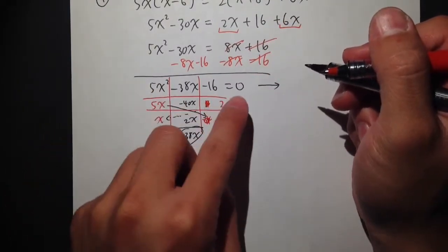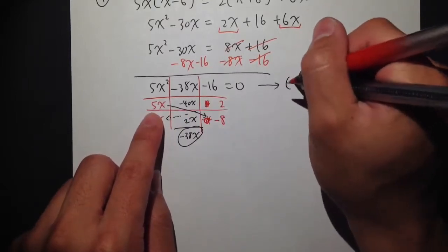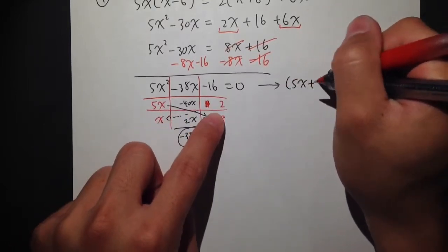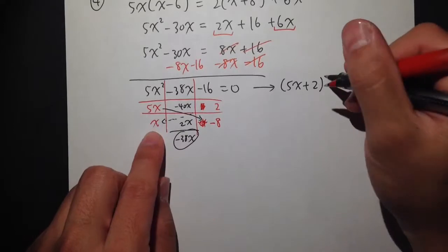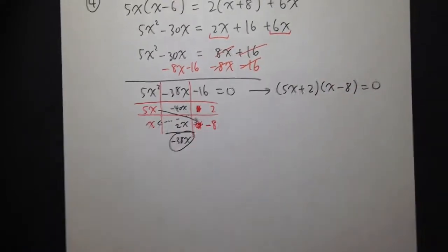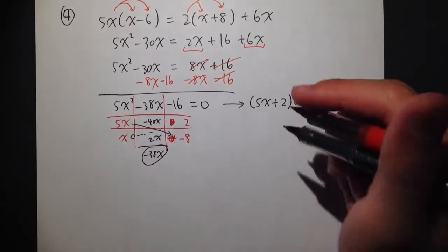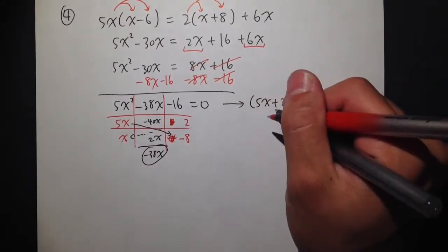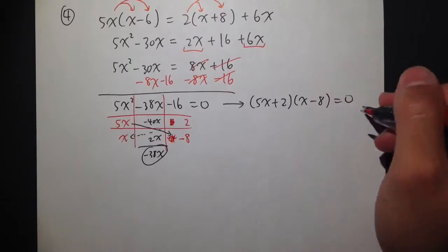We can have this, right? And then factor it to be 5x plus 2x minus 8 equals to 0. Okay? So then, we have 5x plus 2 times x minus 8 equal to 0.